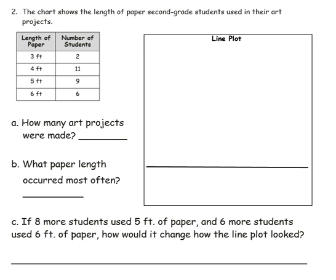This question says the chart shows the length of paper second-grade students used in their art projects. On the left-hand side of the chart, we see the different lengths of paper, and on the right-hand side, we see the number of students that used each of those paper lengths. The first thing we need to do is to transfer this information onto our line plot.